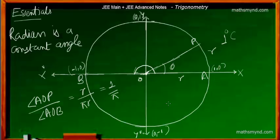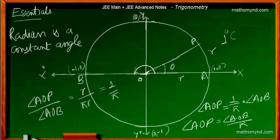That simply means that angle AOP is angle AOB by pi.